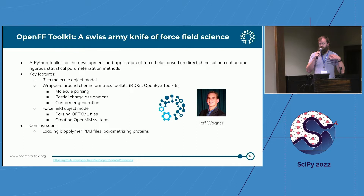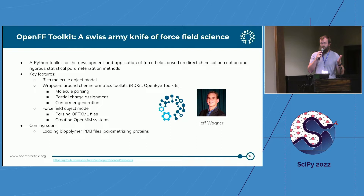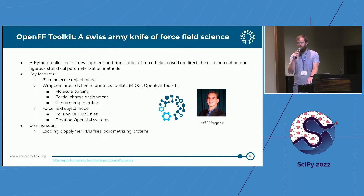SMIRNOFF-style force fields are encoded as OFF XML files, and the toolkit provides routines for parsing and writing them back out. You can load one into memory and inspect all of the parameters in a force field. Then you can put all that together and say: I have a molecule or a box of molecules and I have a force field — I want to do something with that — and out of that you can create an OpenMM system. Coming soon is tooling to load biopolymer PDB files and retooled infrastructure to parameterize proteins.